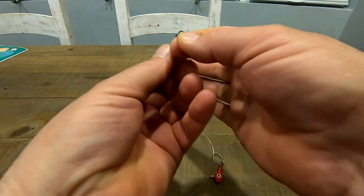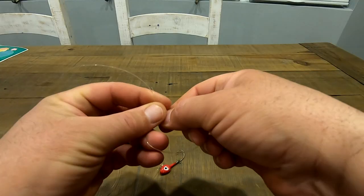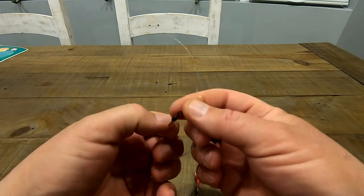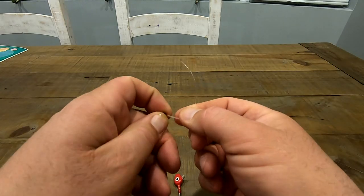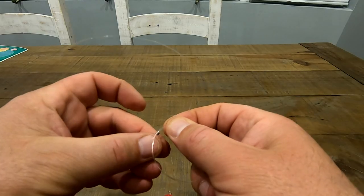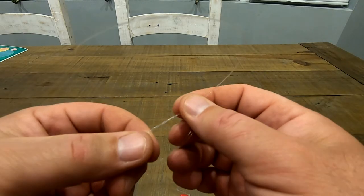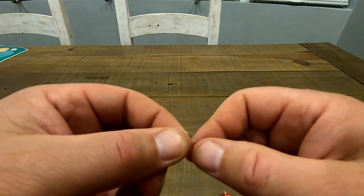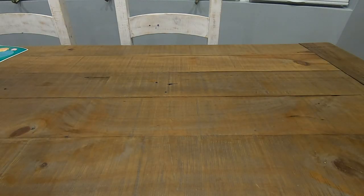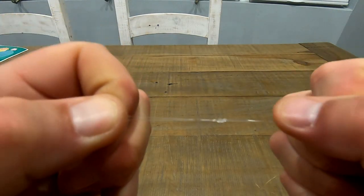And you can tie it, I forget what this is called - this might be the surgeon's loop or something. You come around, you go one, you go two right through, and you come tight with it. Again remember you always want to moisten your knot. So off camera for one second, moisten it up, snug it down.